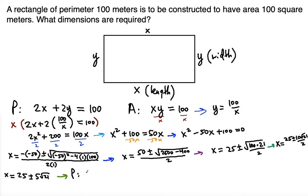2 times 25 and we're going to test the positive solution plus 5 radical 21 plus 2y is equal to 100. So what that gives us is 50 plus 10 radical 21 plus 2y is equal to 100. That means you subtract 50 on both sides, subtract 10 radical 21 because we want to isolate the y.